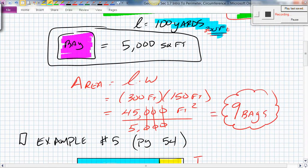Then we found the area of the field. So the area was length times width. So the area was 300 times 150, gave us 45,000 feet squared. We divided by 5,000 since one bag gives you 5,000 square feet. So we need a total of nine bags for that problem.